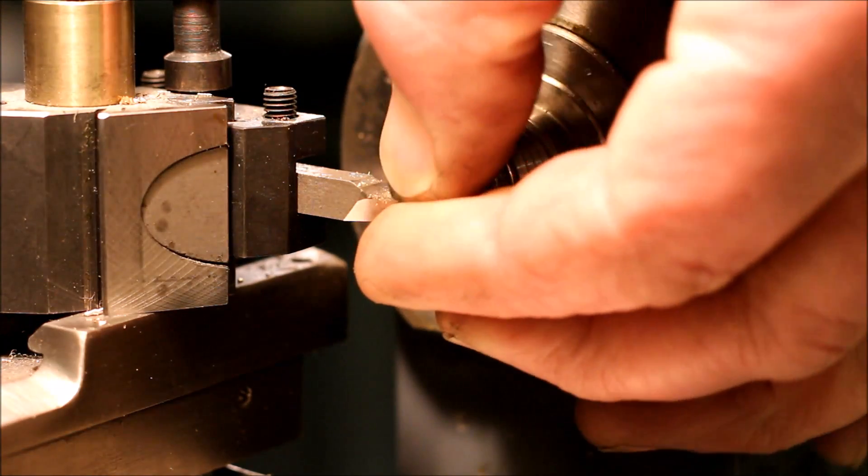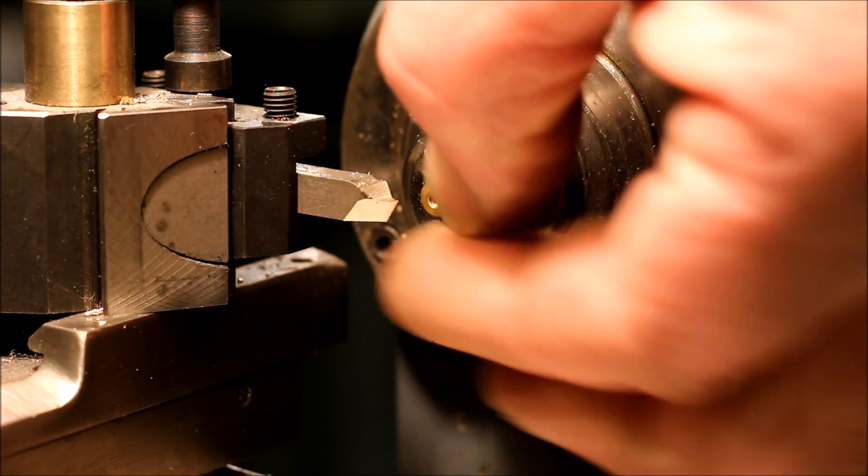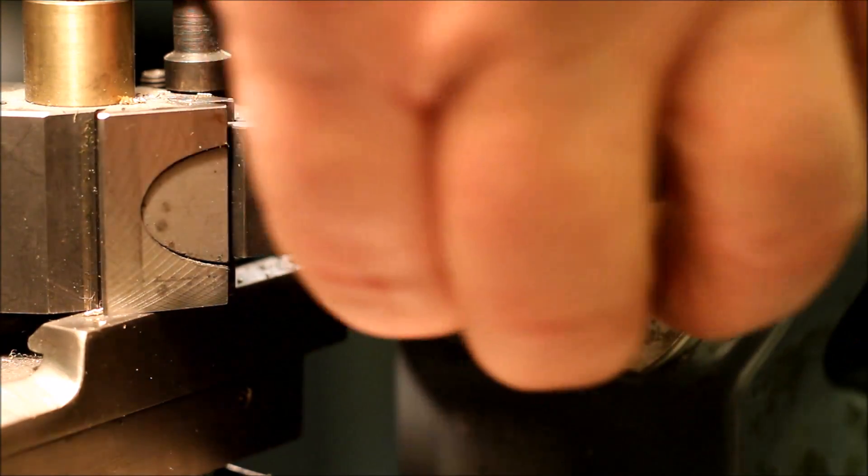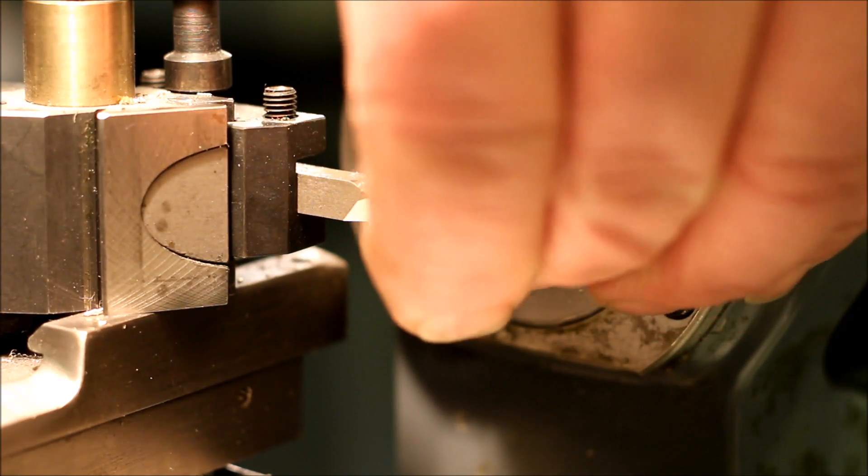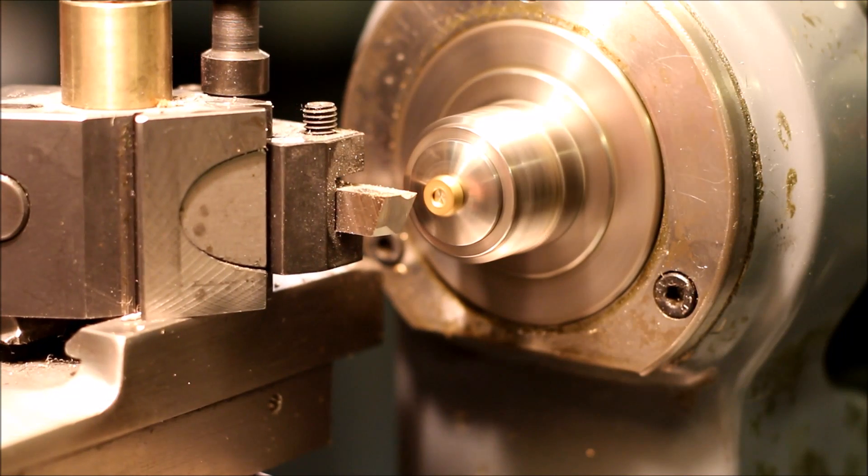To make the nuts a little bit less thick I placed a 3mm screw in the collet chuck and made the nut a little bit thinner.